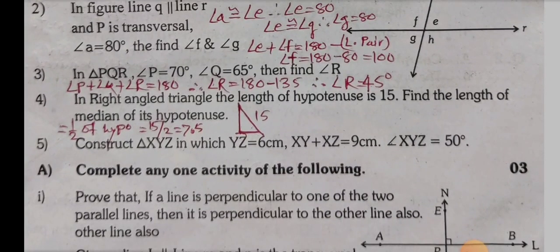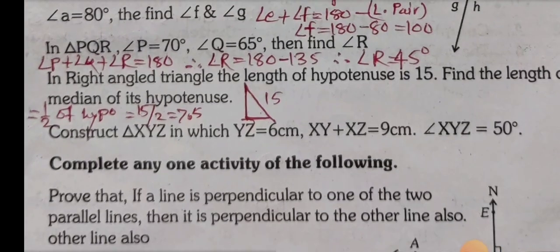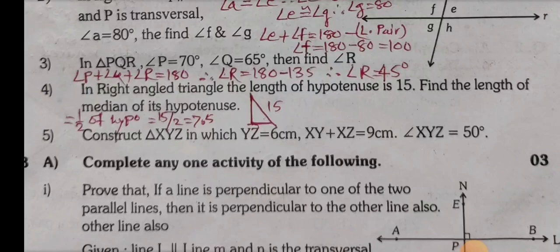Sub-question 3: In triangle PQR, angle P equals 70 and angle Q equals 65. Find angle R. The sum of angles P, Q, and R equals 180. Therefore angle R equals 180 minus 135 equals 45.